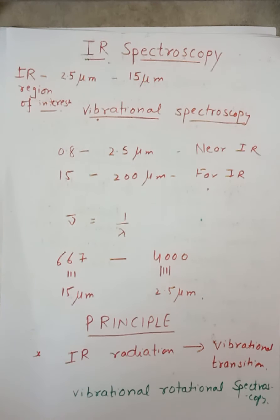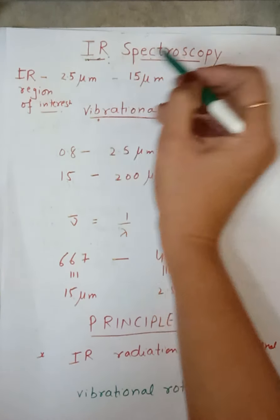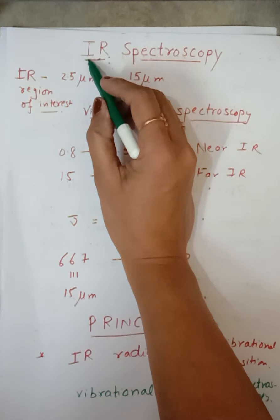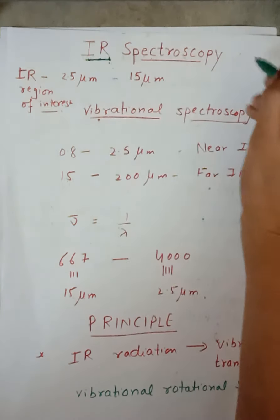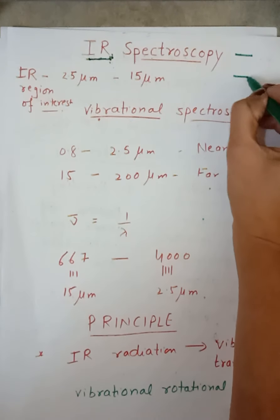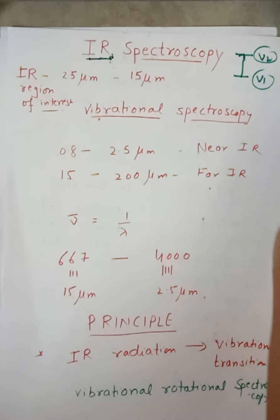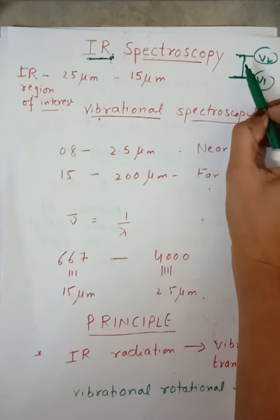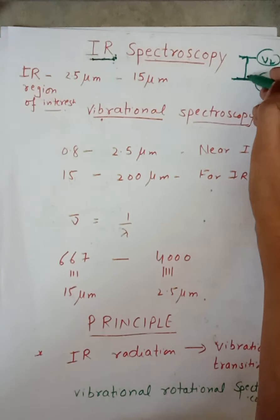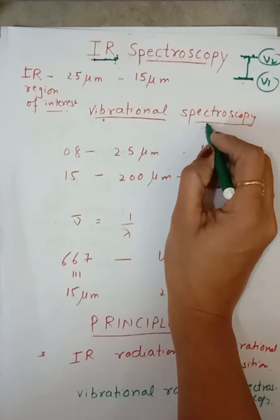In this video we are going to discuss basics of IR spectroscopy. IR spectroscopy means infrared spectroscopy, so we will use infrared radiations. The energy of infrared radiations is sufficient to cause transition between various vibrational levels, meaning our molecule will be excited from one vibrational level to another. So it involves vibrational transitions, and that's why it is also called vibrational spectroscopy.